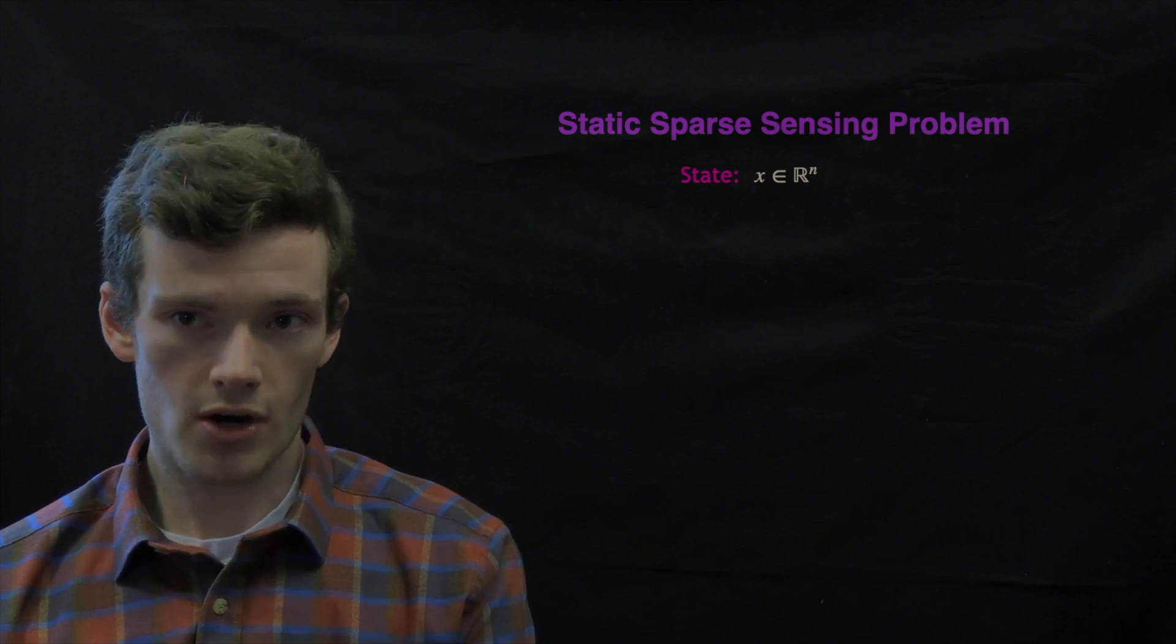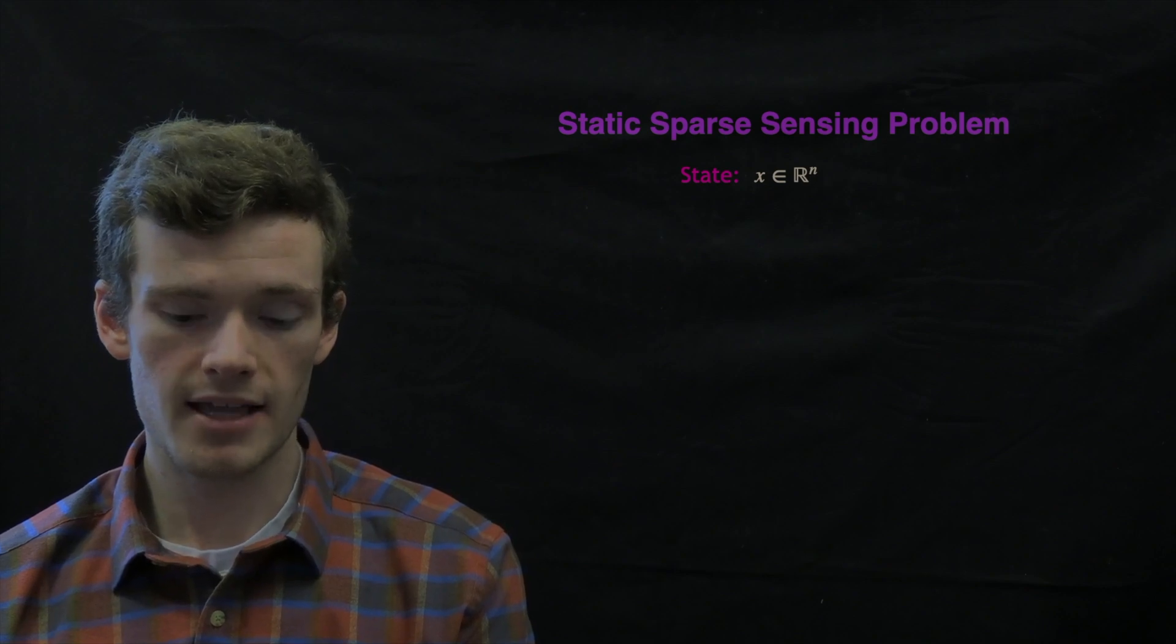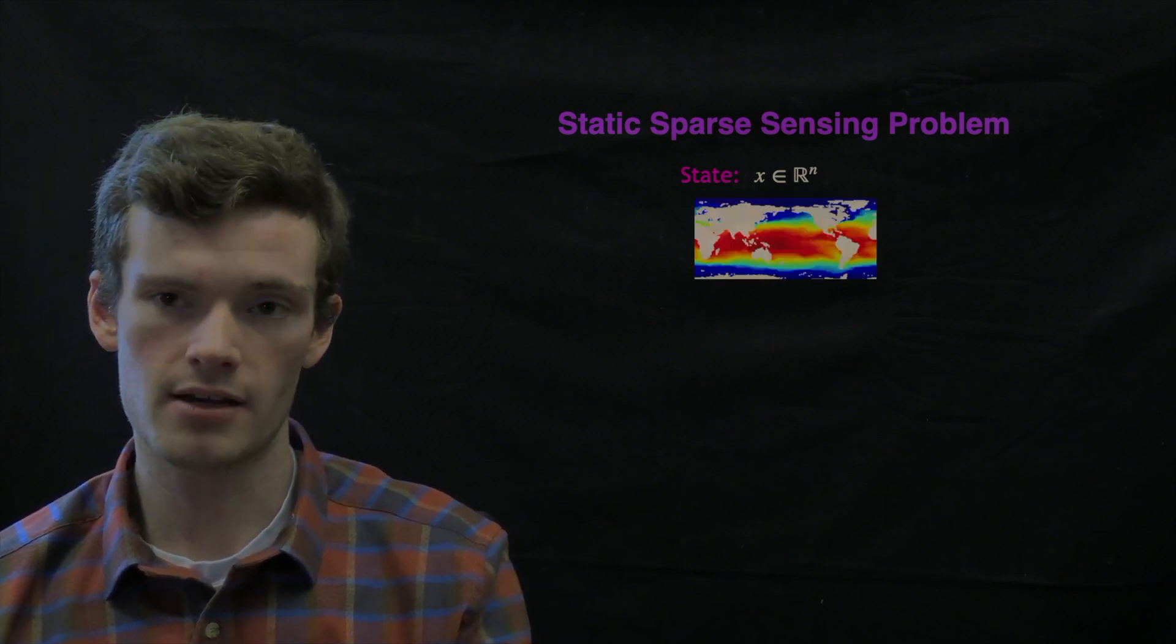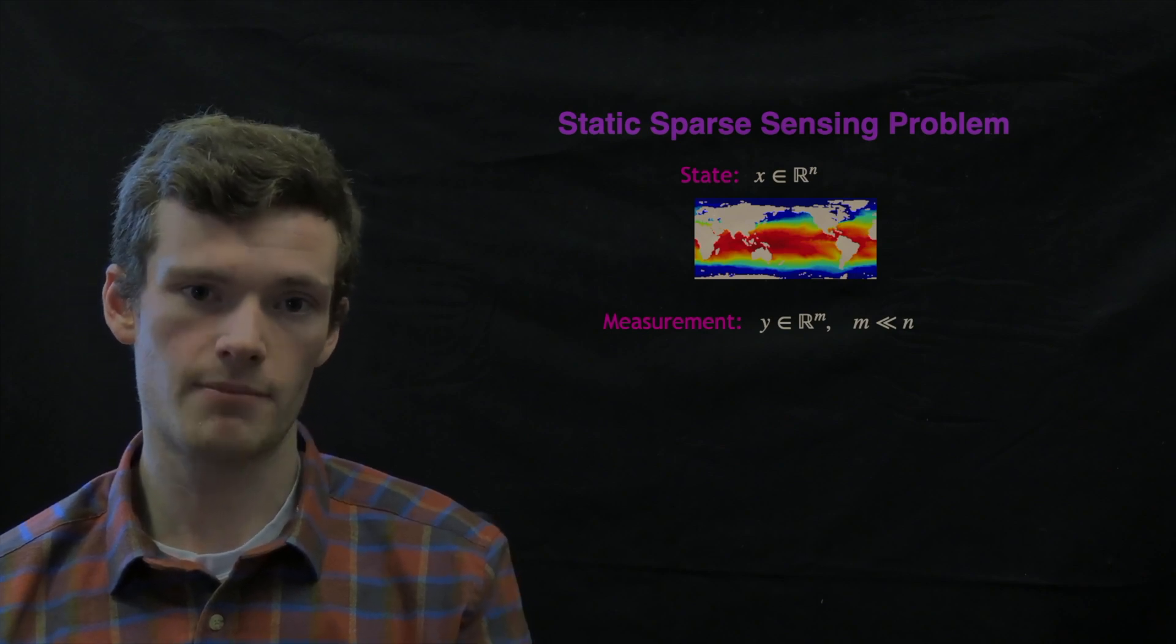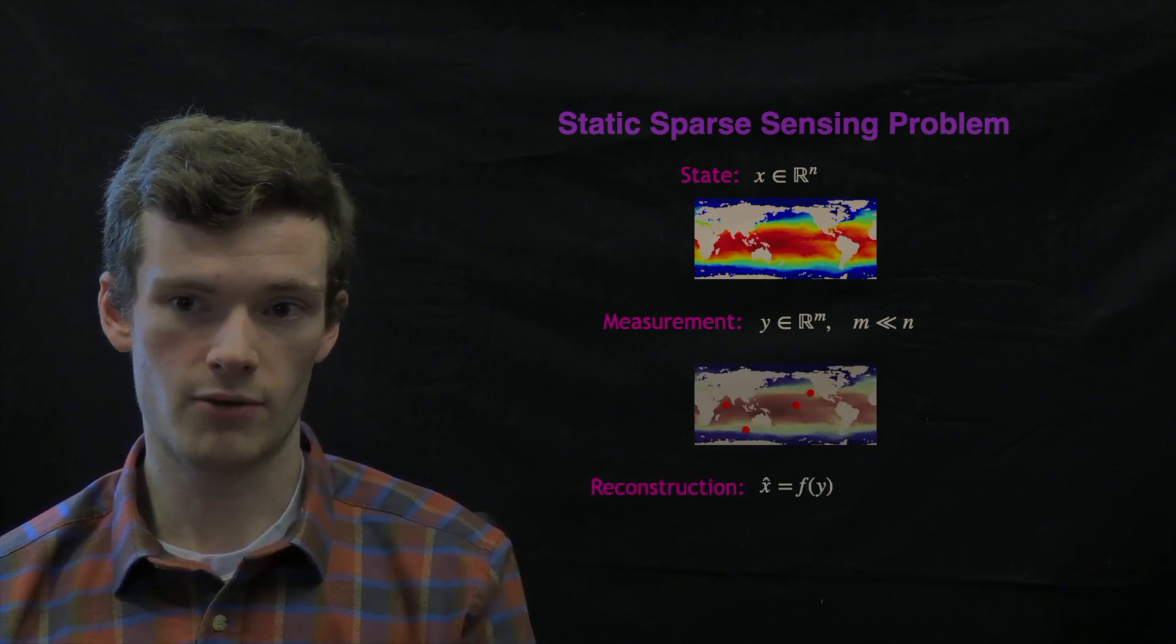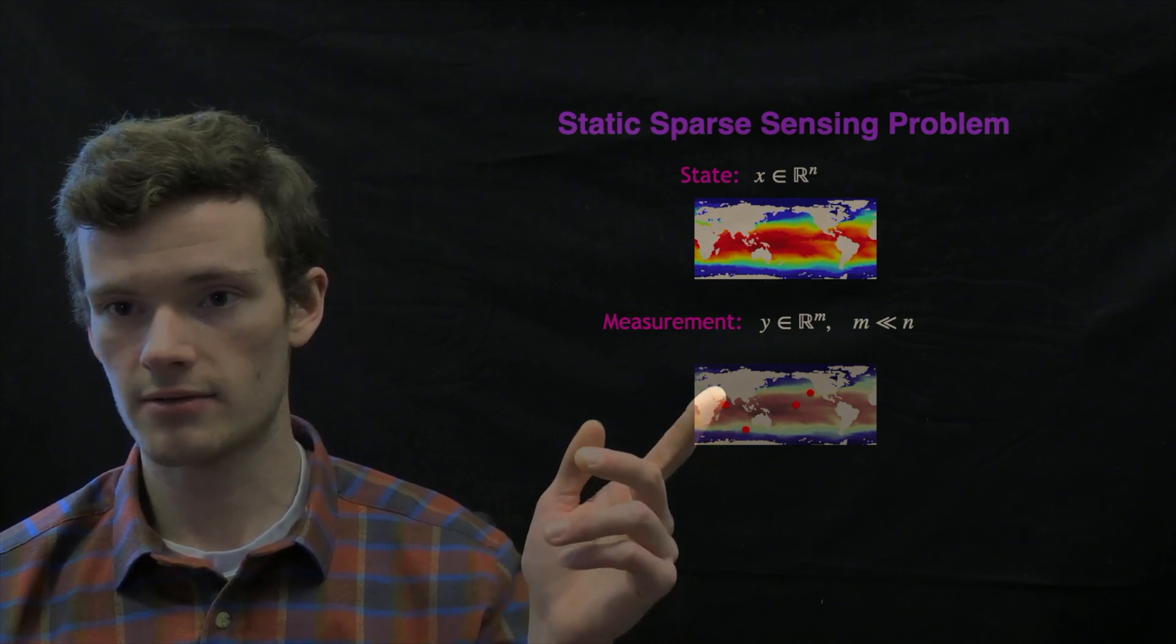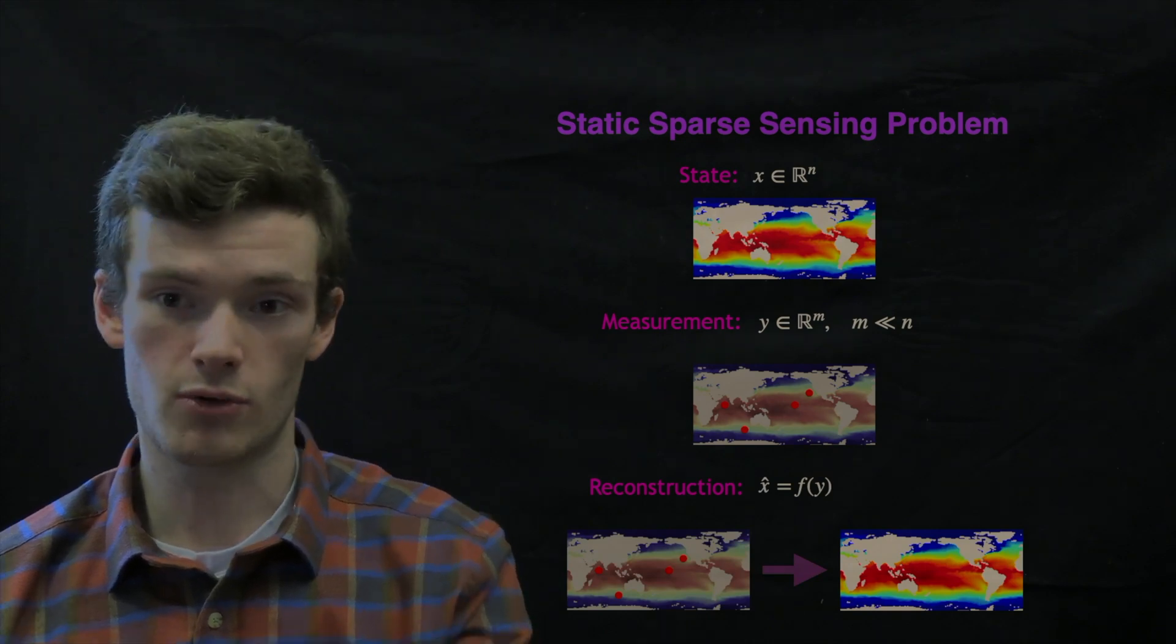So to start, I want to frame what I'll call a static sparse sensing problem. And what I mean by a static sparse sensing problem is a problem where we have some high dimensional state, X, an element of R^n. As a sort of guiding example for these first few slides, we can think about sea surface temperature. And we also have some set of measurements, Y, an element of R^m, where M is much, much less than N.